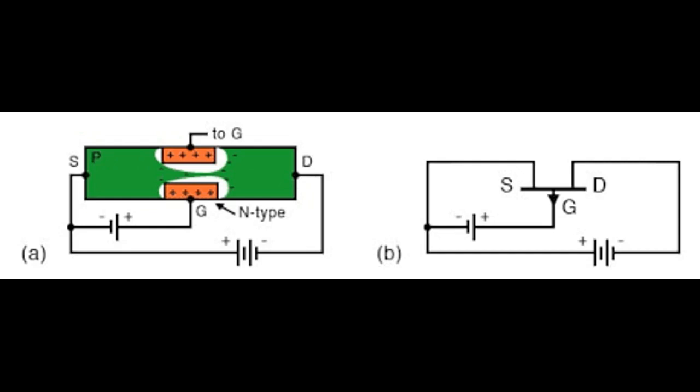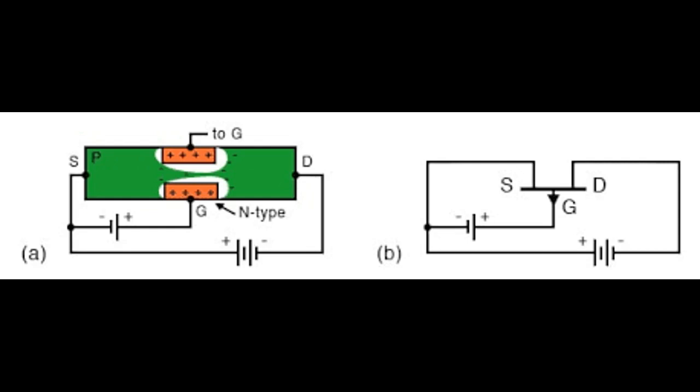On the other hand, when the reverse voltage VGS is decreased, the width of depletion layer also decreases. Hence, the width of conduction channel increases and the resulting source to drain current increases.